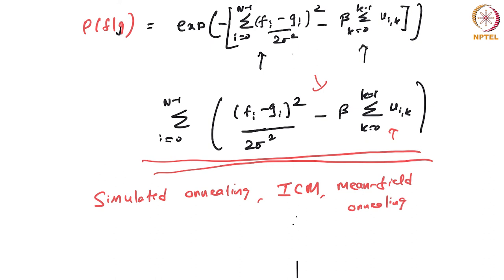We are looking at clique potentials where we count the number of pixels with similar values, but the number of arrangements increases exponentially with image dynamic range. There are many greedy strategies to estimate Fi — that is the problem here, and we have started from the Bayesian framework.